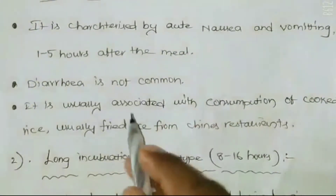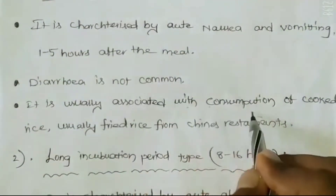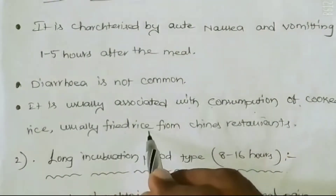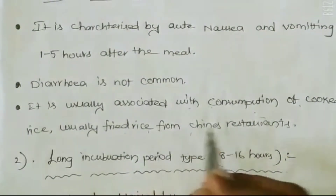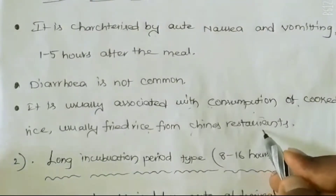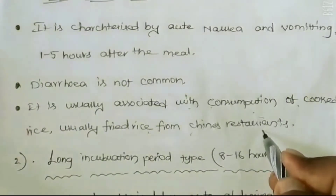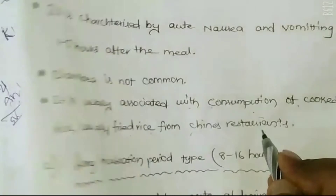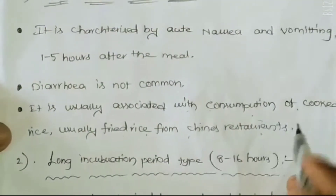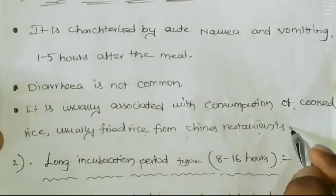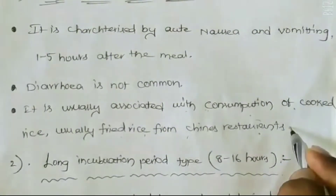This type is usually associated with the consumption of cooked rice, usually fried rice from Chinese restaurants. That is the first type of food poisoning. Now we see the second type of food poisoning.